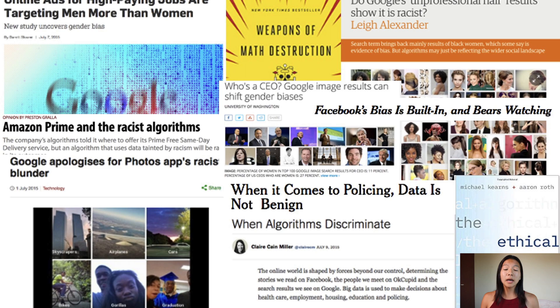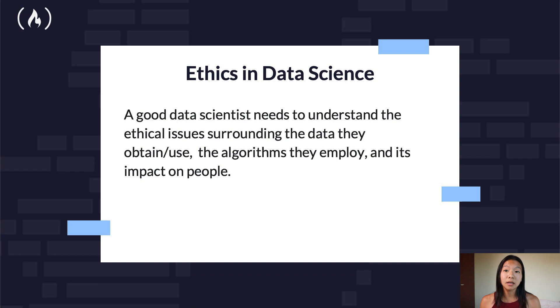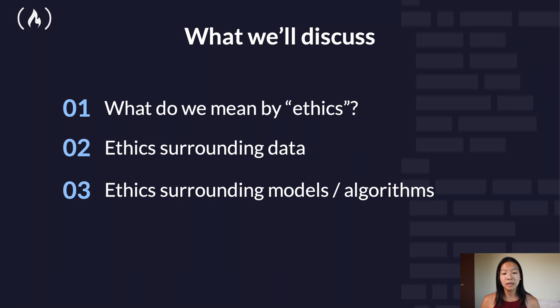We're just trying to figure out what is the right thing to do with this data, and how to effectively use it while staying ethically correct. OpenDS for All also points to an edX course on this topic, and I will link it in the description below. A good data scientist needs to understand the ethical issues surrounding the data they obtain or use, the algorithms they employ, and their impact on people. In this talk, we'll discuss what exactly we mean by ethics, the ethics surrounding data — which includes privacy and informed consent, ownership and intellectual property — as well as ethics surrounding models and algorithms such as biased algorithms, bad results from good data, fairness, and reproducibility.